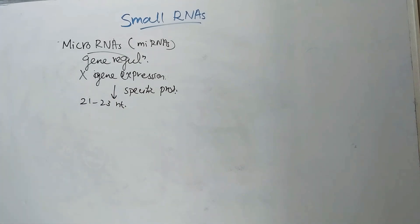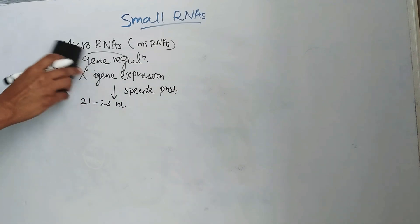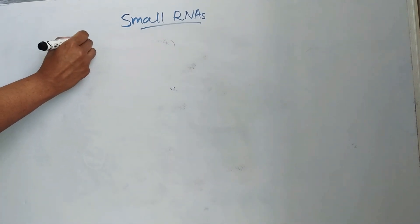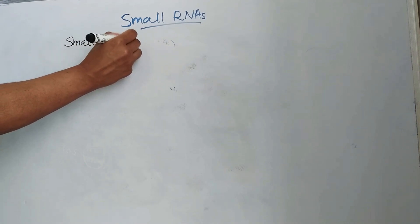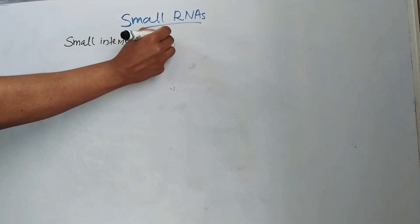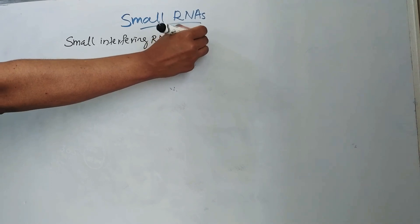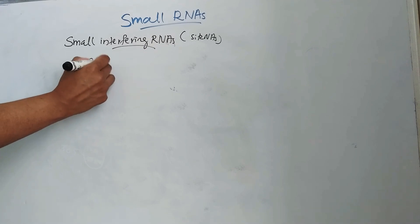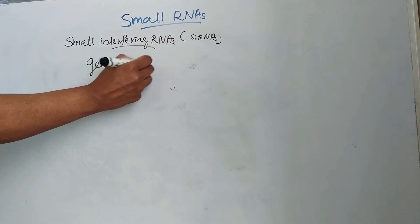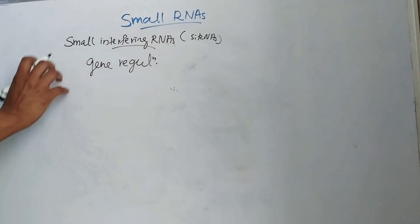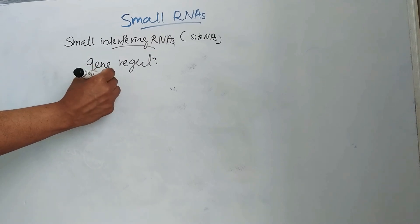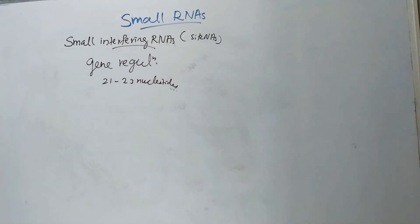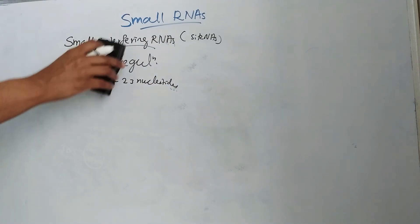Next one is small interfering RNAs or siRNAs. These are also involved in gene regulation, and they have a length of 21 to 23 nucleotides.